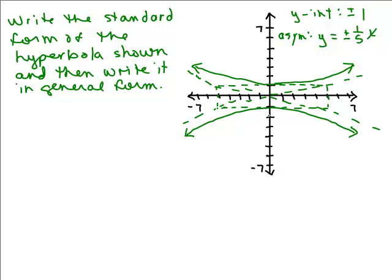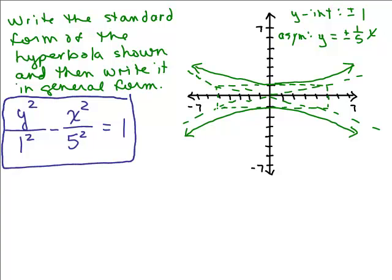This time, since it's going up and down, it's positive in front of the Y squared. So I have Y squared over 1 squared minus X squared over 5 squared equals 1. This is our standard form. You can write that more simplified as Y squared minus X squared over 25 equals 1.